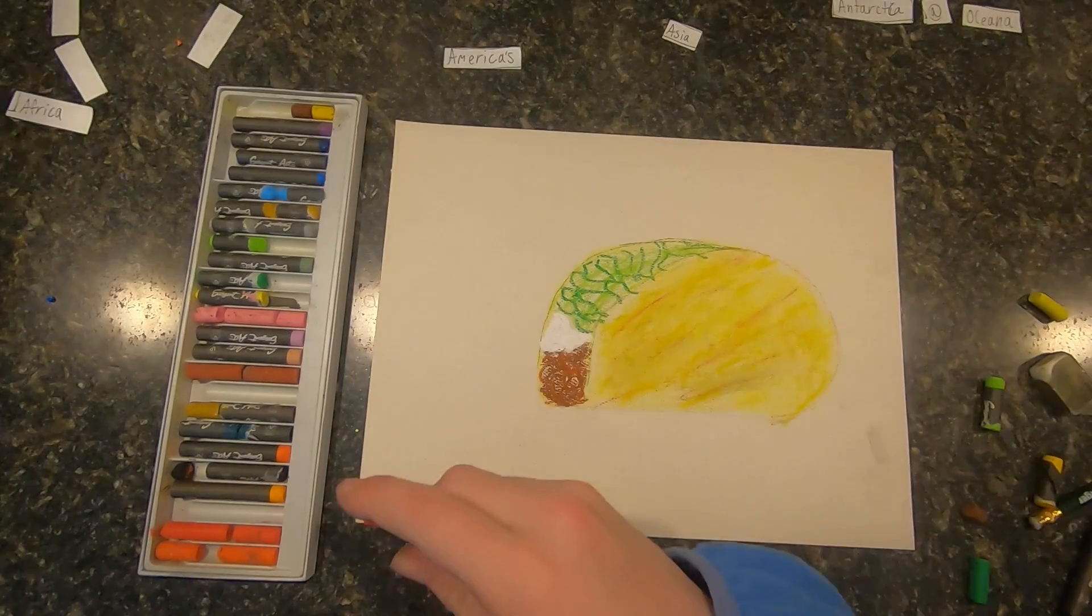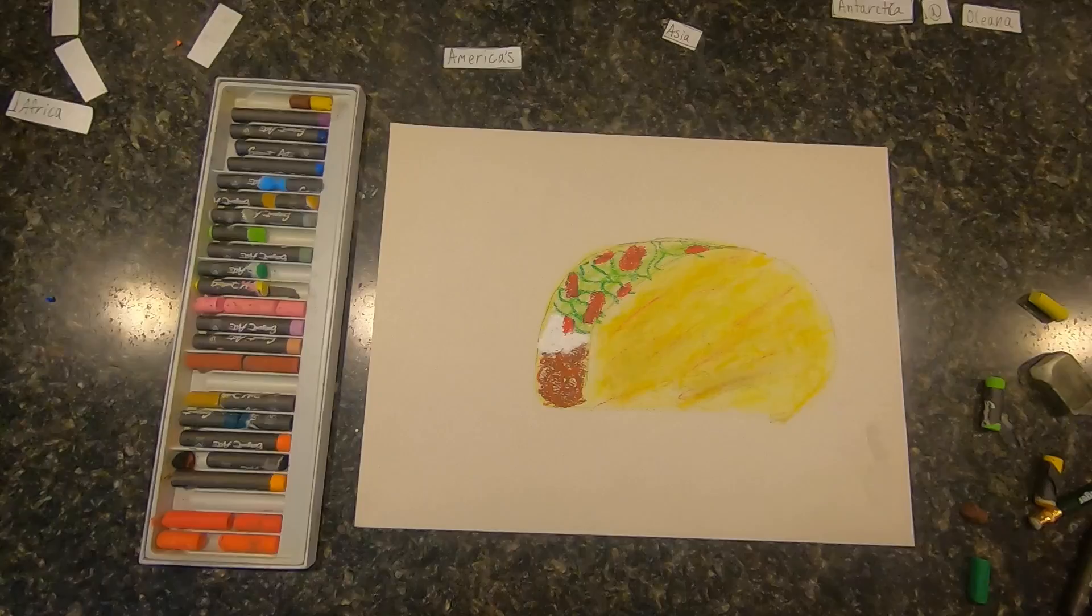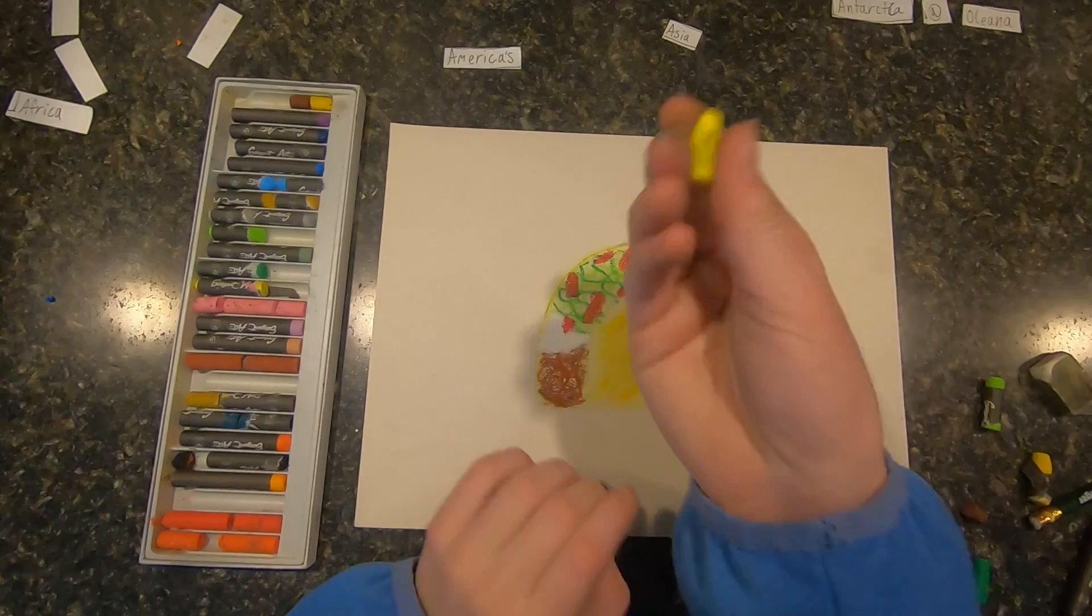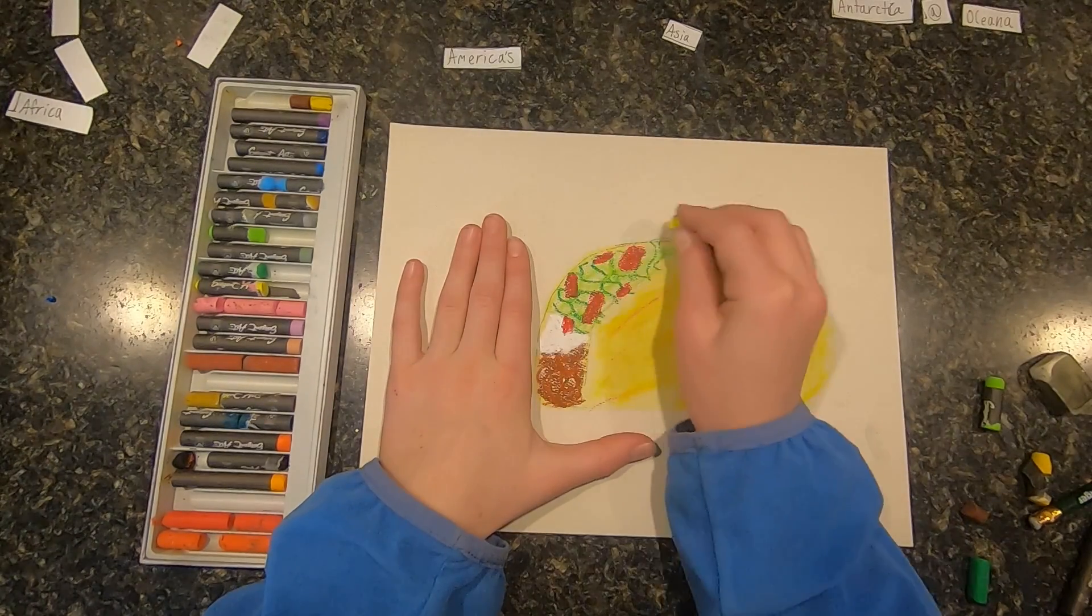Like that. And now I'm going to take my red and start making the tomatoes. Really put them in there. And then I'm going to take my lighter yellow and make some cheese.